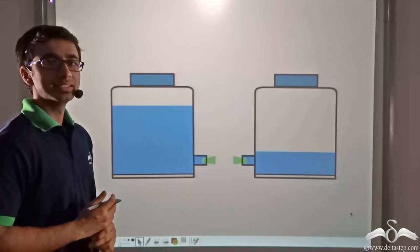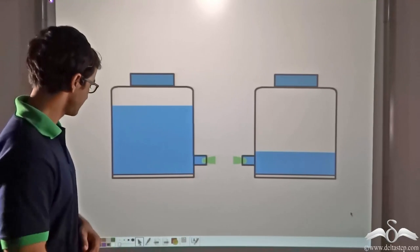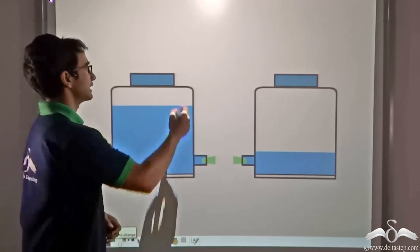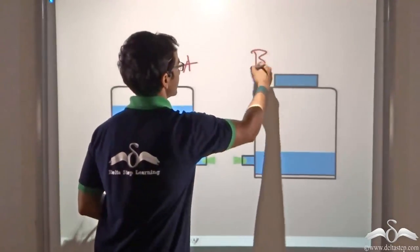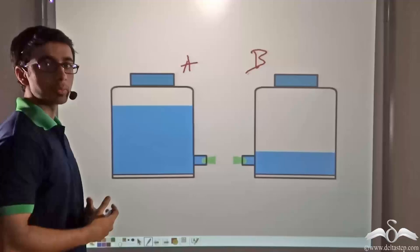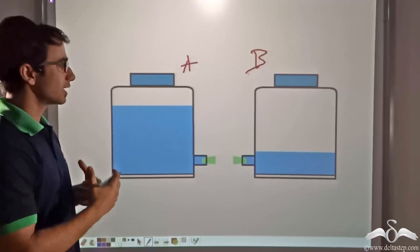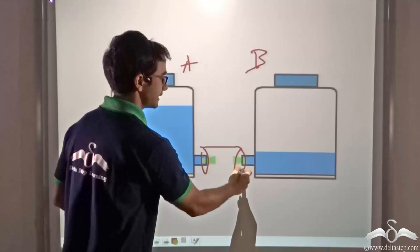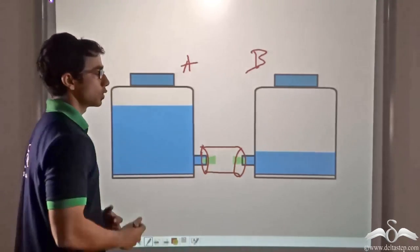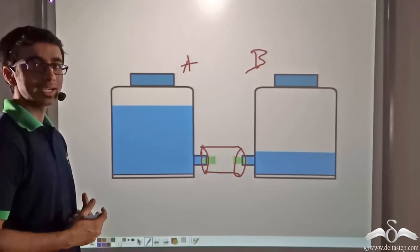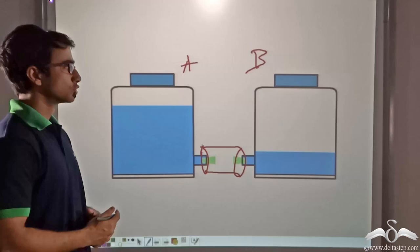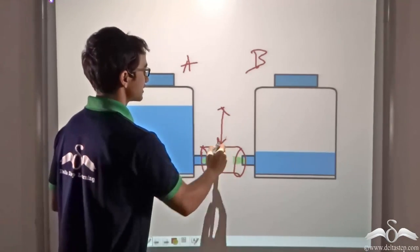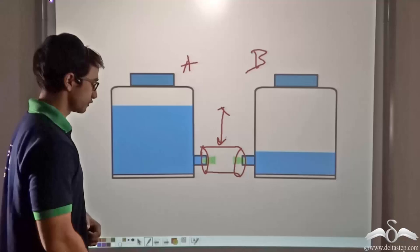We have seen that when we consider two vessels that have an unequal level of water — vessel A and vessel B have differing amounts of water. Under such a circumstance, when these vessels are connected with a pipe, water will flow, as we saw in our previous lecture. Whenever there is a difference in the level of water, water flows.